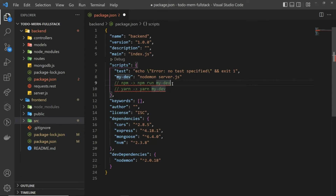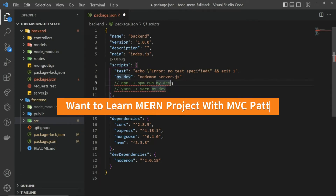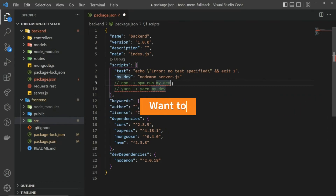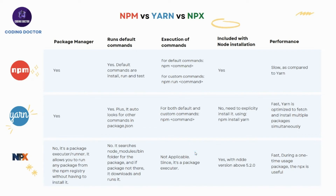Yarn automatically looks in your package.json for commands, whereas with npm you have to write 'run' for commands that are not default. The third point covers command execution: for default commands you write 'npm command-name', for custom commands you write 'npm run command-name', whereas for yarn it doesn't matter if it's a default or custom command — you just write 'yarn command-name'. For npx, this execution pattern is not applicable since it is a package executor whose sole purpose is to run or execute packages.